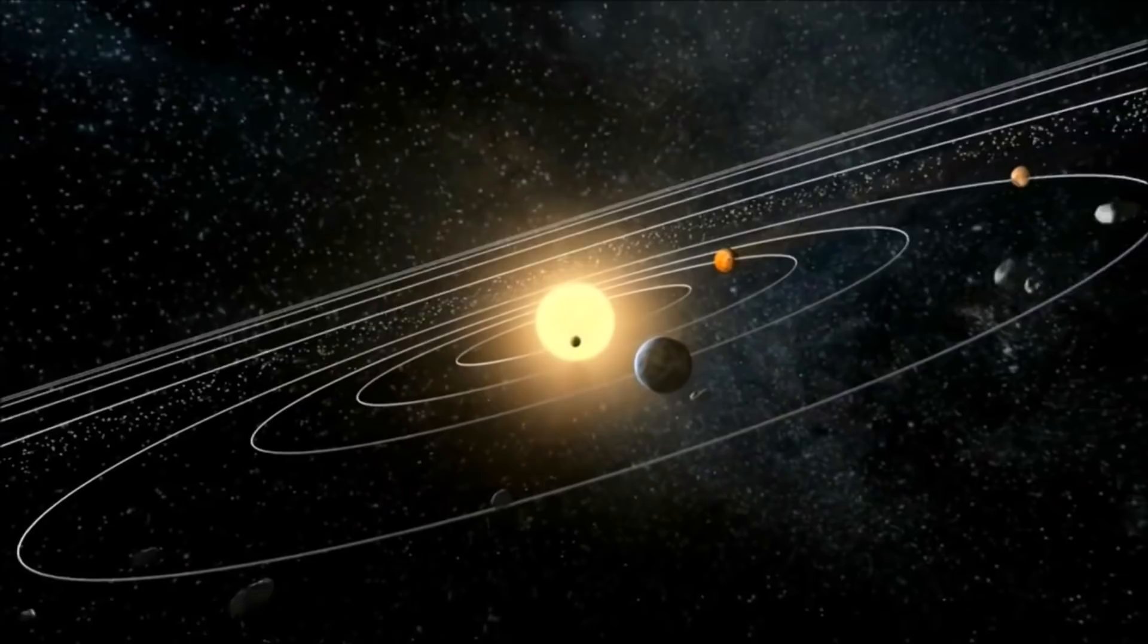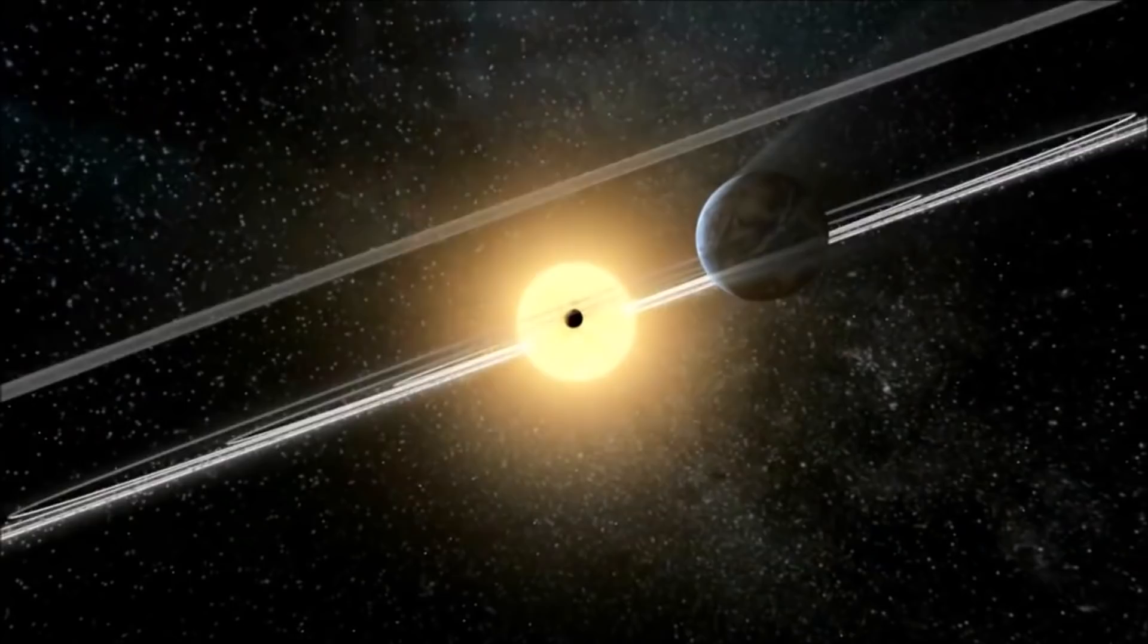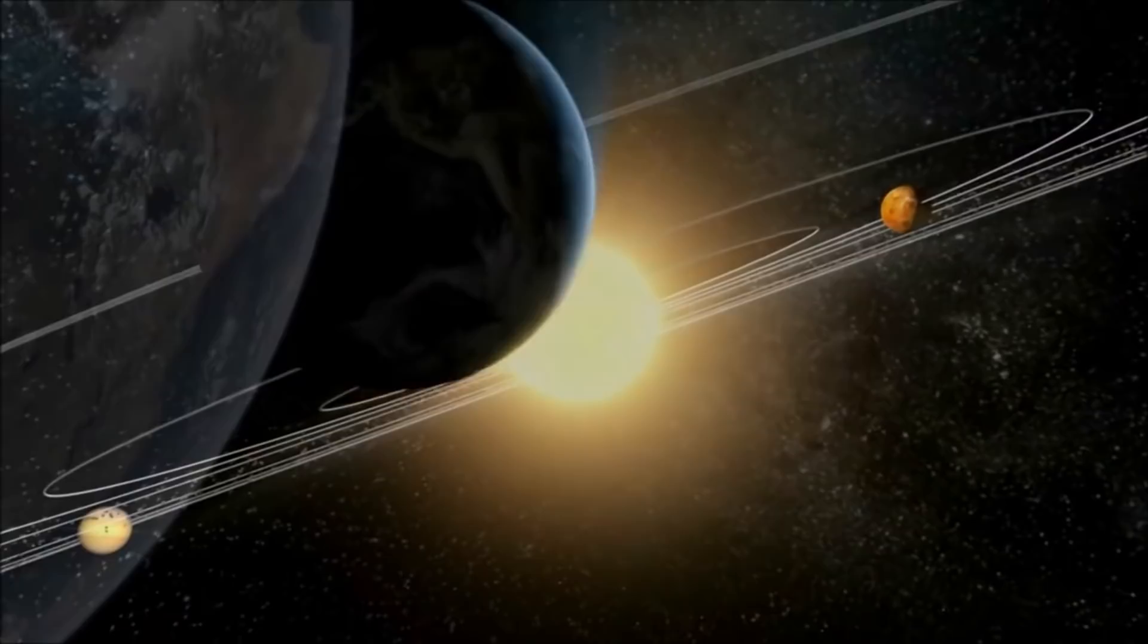In February 2017, organic tholins were discovered in another of Ceres craters, Ernutet. These organic materials are a key ingredient for life to form and thrive, but what made it more interesting was the fact that these organic materials seemed to be endogenous, meaning that they originated from inside the planet itself.